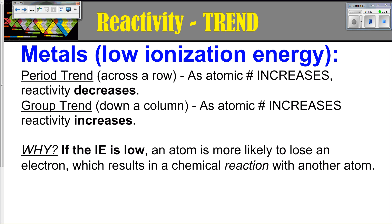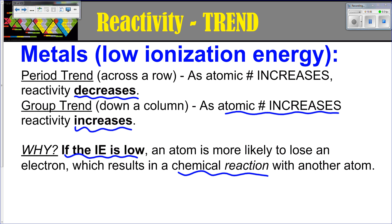Metals have a very low ionization energy — it's not too difficult to pull an electron away. As you move across a period and your atomic number increases, the reactivity of a metal is going to decrease. As you move down a group and your atomic number increases, your reactivity is going to increase. For example, in the alkali metals, cesium, francium, and rubidium at the bottom of that group are going to be much more reactive than lithium, sodium, and potassium at the top. If the ionization energy is low, an atom is more likely to lose an electron, and if it's more likely to lose an electron, then you're undergoing a chemical reaction — hence reactivity.